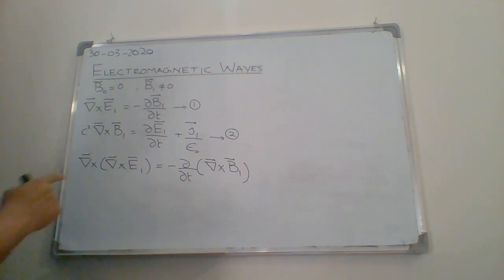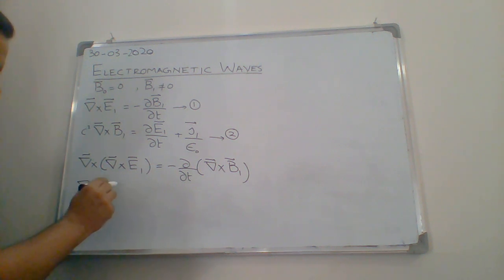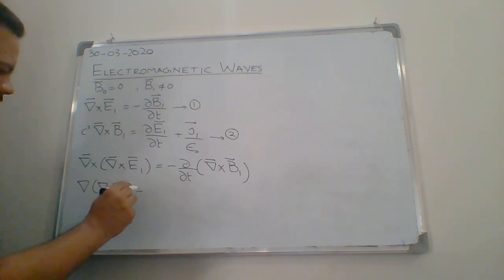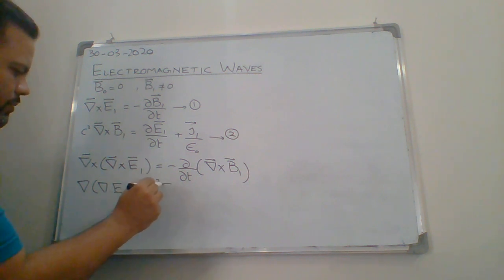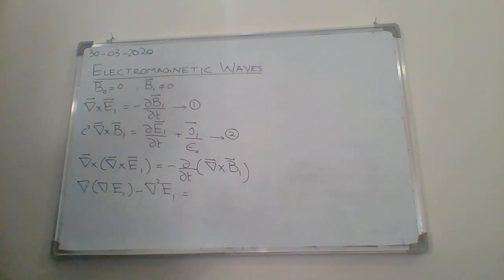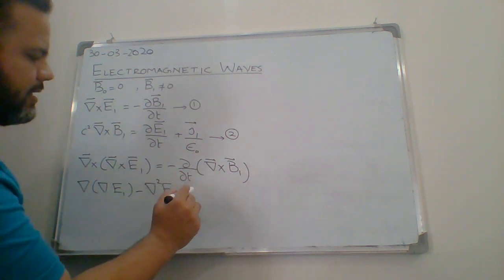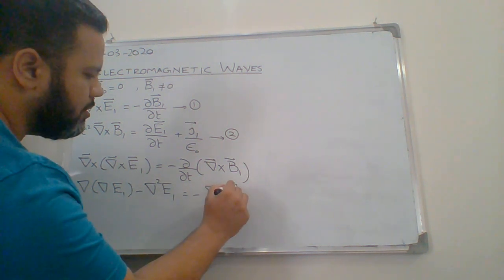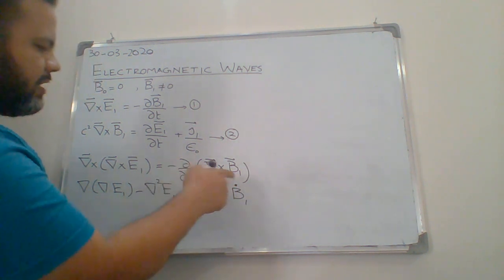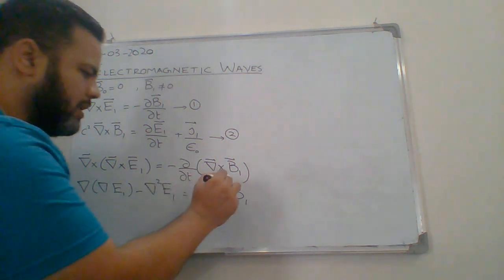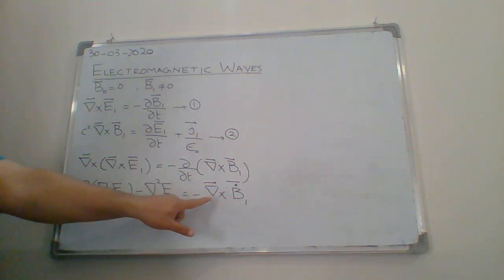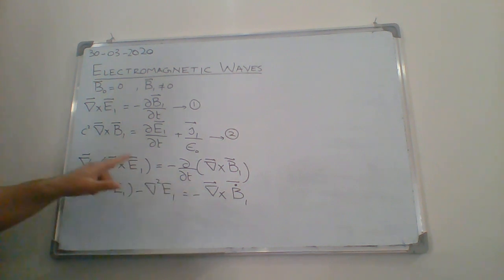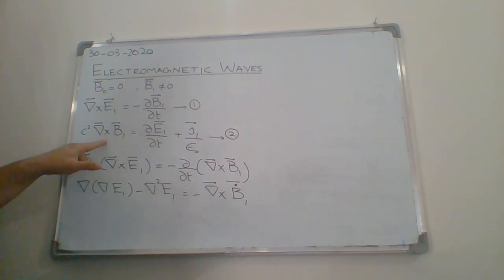Now del cross del cross E1 gives us the identity del(del dot E1) minus del squared E1, which equals minus the time derivative of del cross B1. In order to calculate this del cross B1 dot, I have to take the time derivative of equation 2.